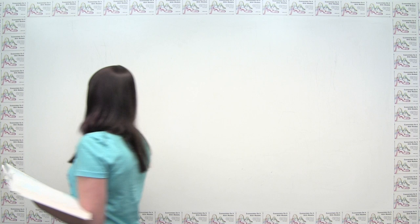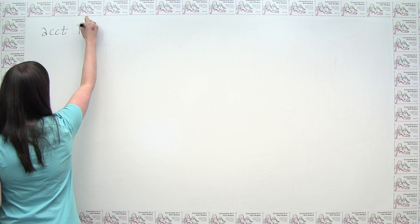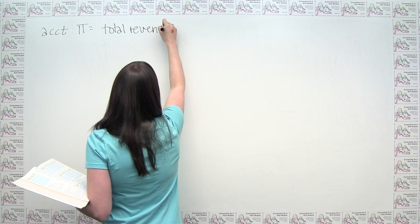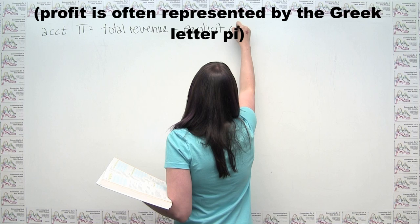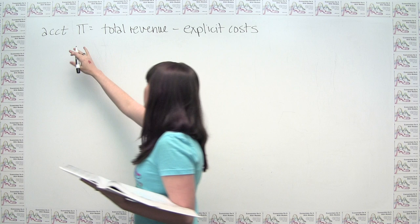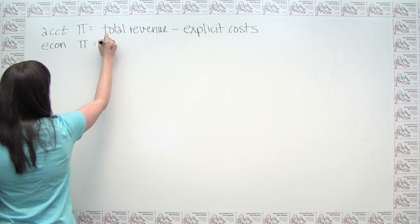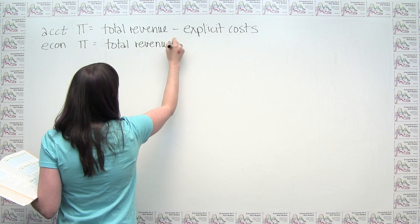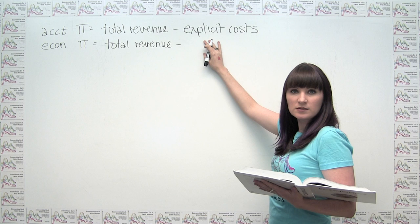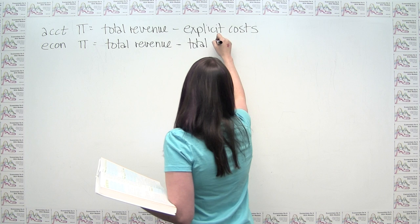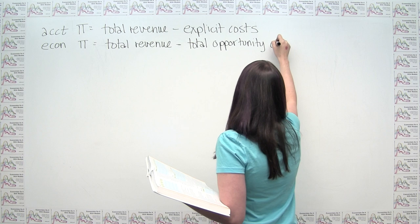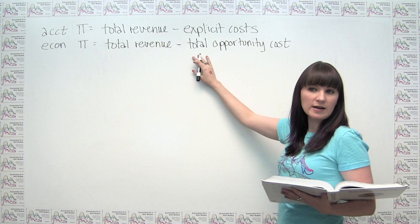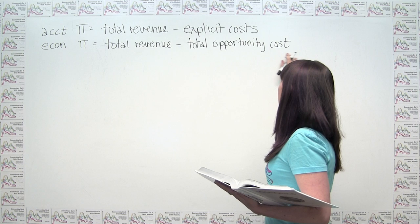Accounting profit is total revenue minus explicit cost. Whereas economic profit again starts with total revenue, but rather than just subtracting off explicit cost, we subtract off total opportunity cost. We can say that this total opportunity cost — what we actually refer to in economics as total cost — is the sum of explicit cost and implicit cost.